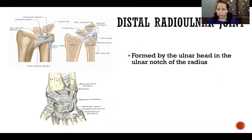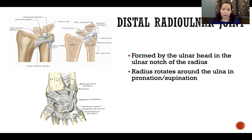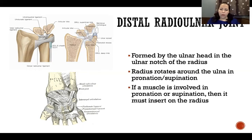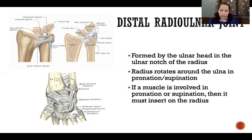The distal radial ulnar joint is formed by the ulnar head in the ulnar notch of the radius. The radius rotates around the ulna in pronation and supination — both the proximal and distal radial ulnar joints work together. If a muscle is involved in pronation or supination it must insert on the radius; if it attaches to the ulna it does not cause any pronation or supination because the ulna is not what's moving during those actions.